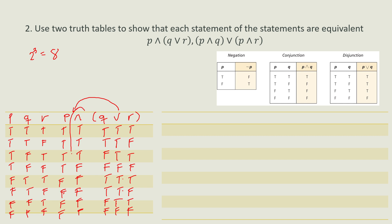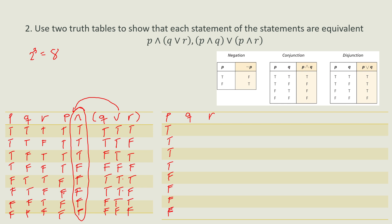Now we check the equivalent statement. We have P, Q, and R again with 8 rows: P is true, true, true, true, false, false, false, false. Q is true, true, false, false, true, true, false, false. R alternates: true, false, true, false, true, false, true, false.